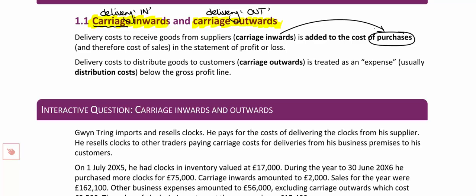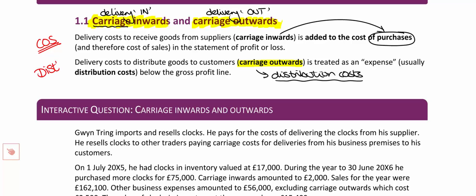Carriage outwards is very different. When we pay to have goods delivered to our customers, this forms part of our distribution costs — and crucially, this is further down in the profit or loss, below the gross profit figure. So although carriage inwards and carriage outwards are very similar expenses, they live in very different places: carriage inwards forms part of cost of sales, carriage outwards is part of distribution.